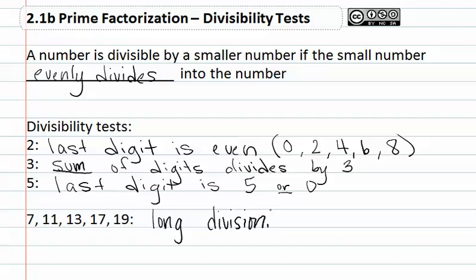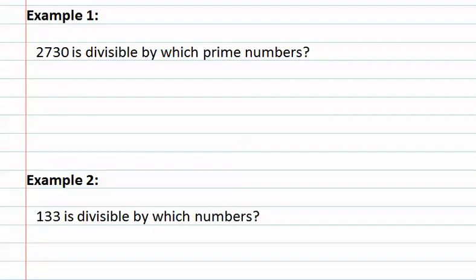Let's see how this works in Example 1. Example 1 asks: 2,730 is divisible by which prime numbers? This means we need to find all of the prime numbers that divide into this number. Let's start by looking at our divisibility tests. The first test checks if 2 divides into this. Remember, the number must be even. The number ends in a 0, and 0 is even, so we know that 2 divides into 2,730.